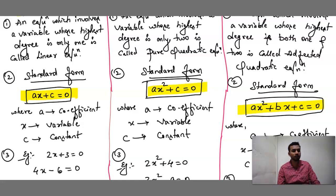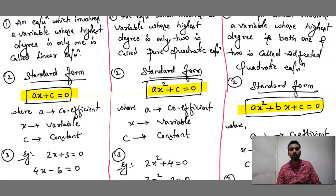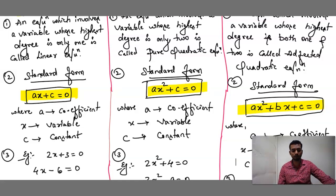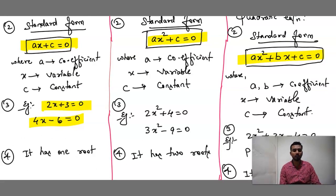Now a very important point: they may ask you to write the standard form of quadratic equation. Remember, affected quadratic equation is also known as quadratic equation. We have given some examples here. For example, 2x + 3 = 0 and 4x − 6 = 0 — the power of x is 1, so it is a linear equation. Where the power of x is only 2, it is a pure quadratic equation.